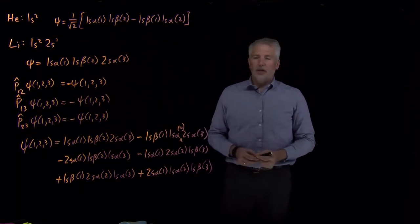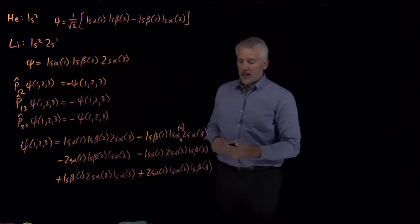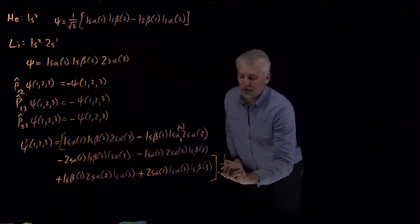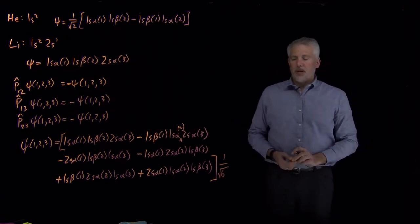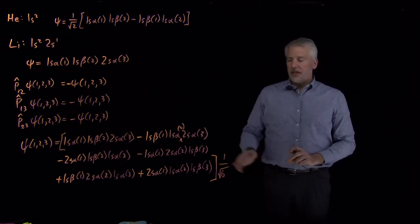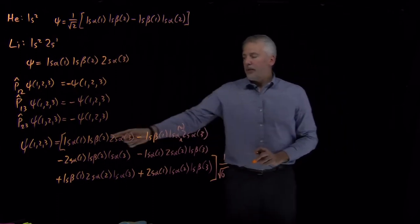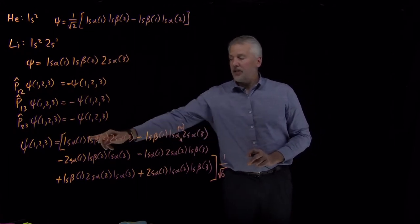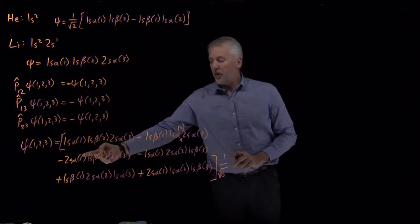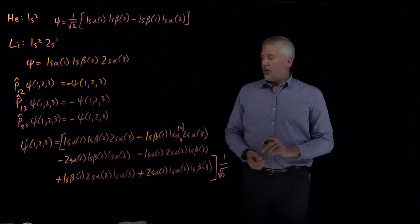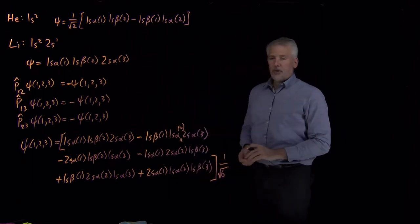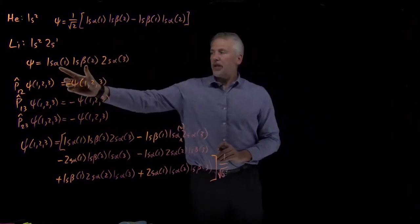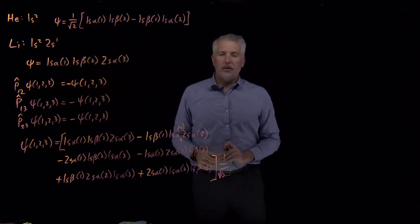Every possible permutation of the three one-electron orbitals is included. The normalized version of this wave function, with six terms in it, is 1 over the square root of 6 times the sum of those six terms. Depending on how many times I've exchanged the variables — once gives a negative sign, twice gives a positive sign — the net result is a properly normalized and anti-symmetrized wave function for 1s2, 2s1: two electrons with different spins in a 1s orbital and one in a 2s orbital.